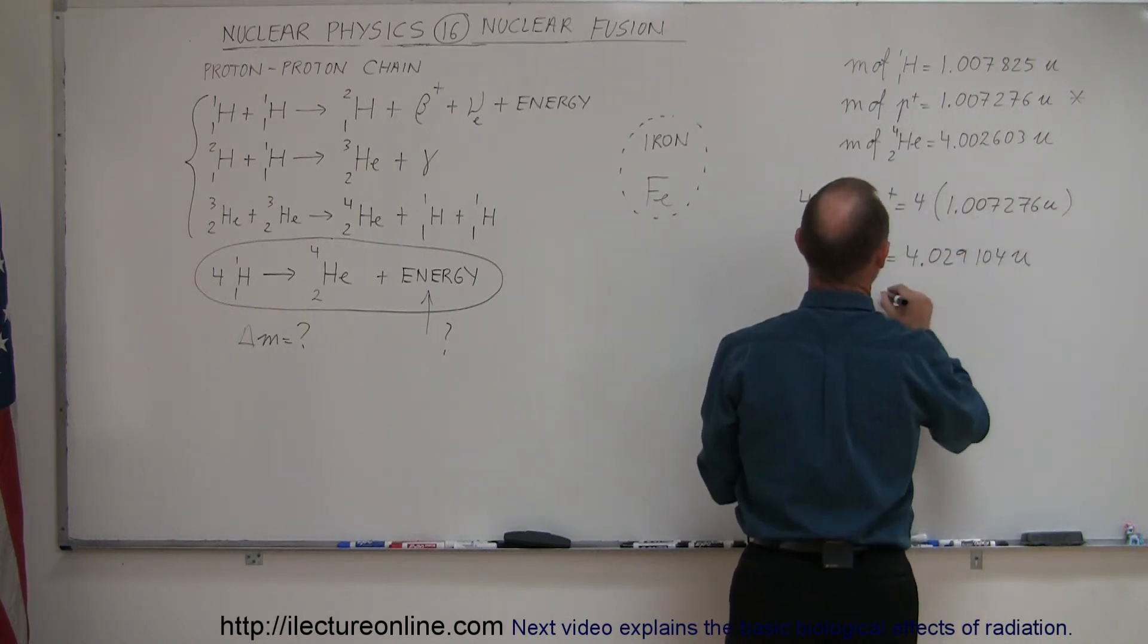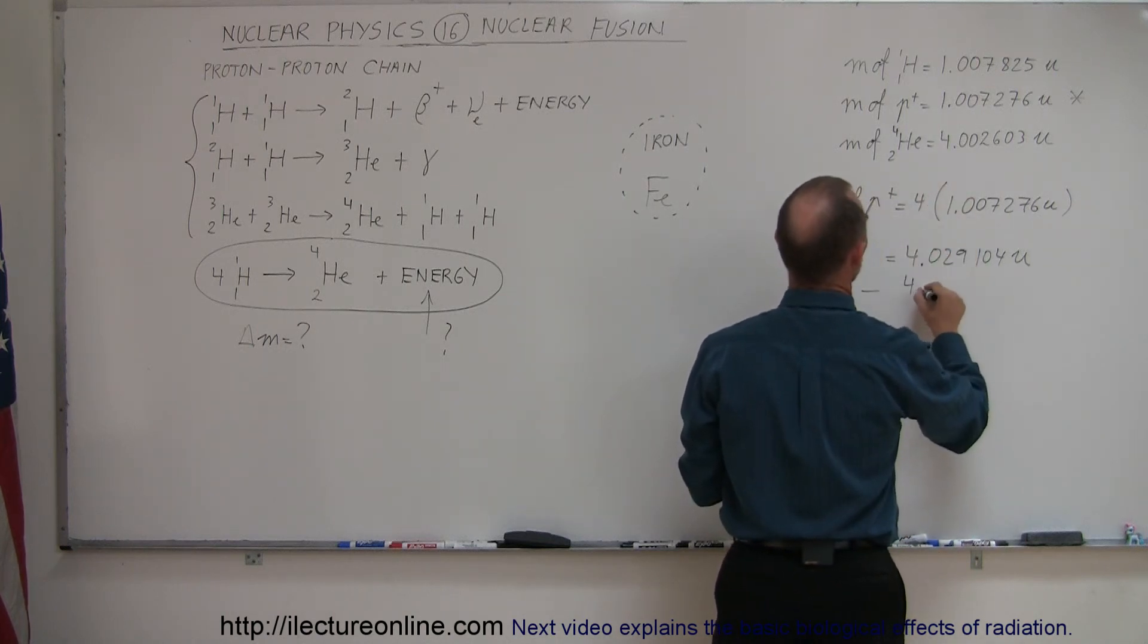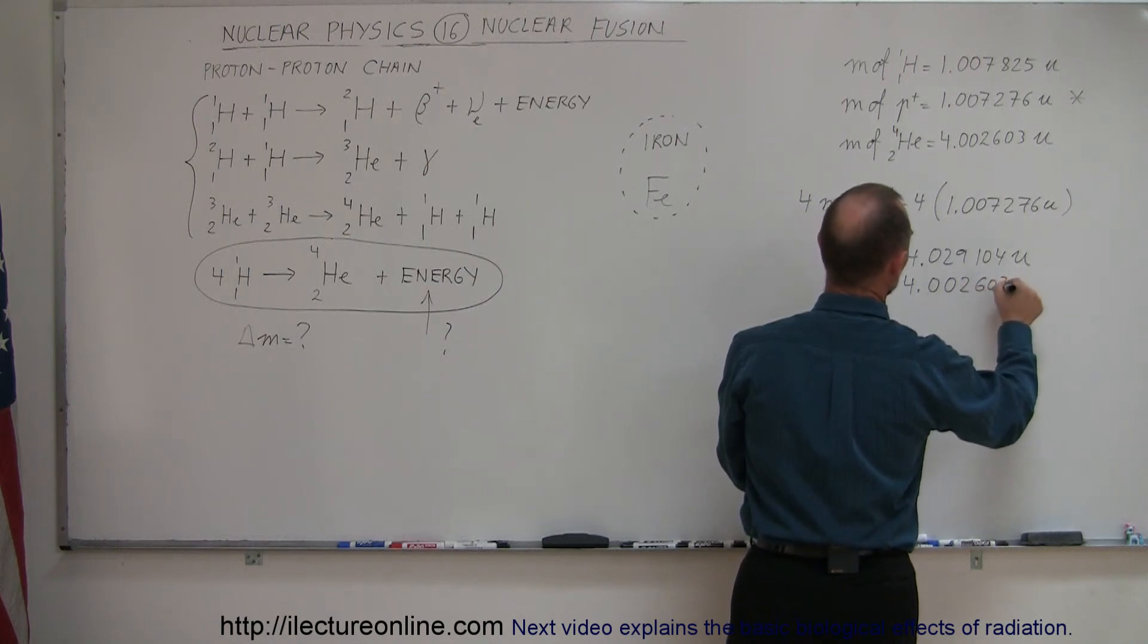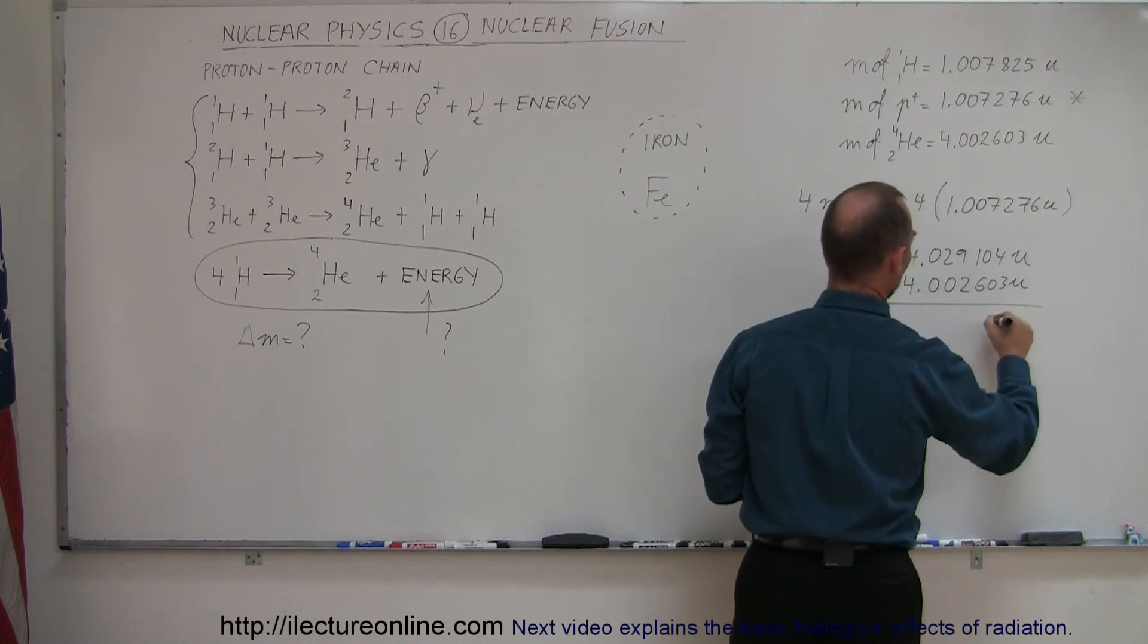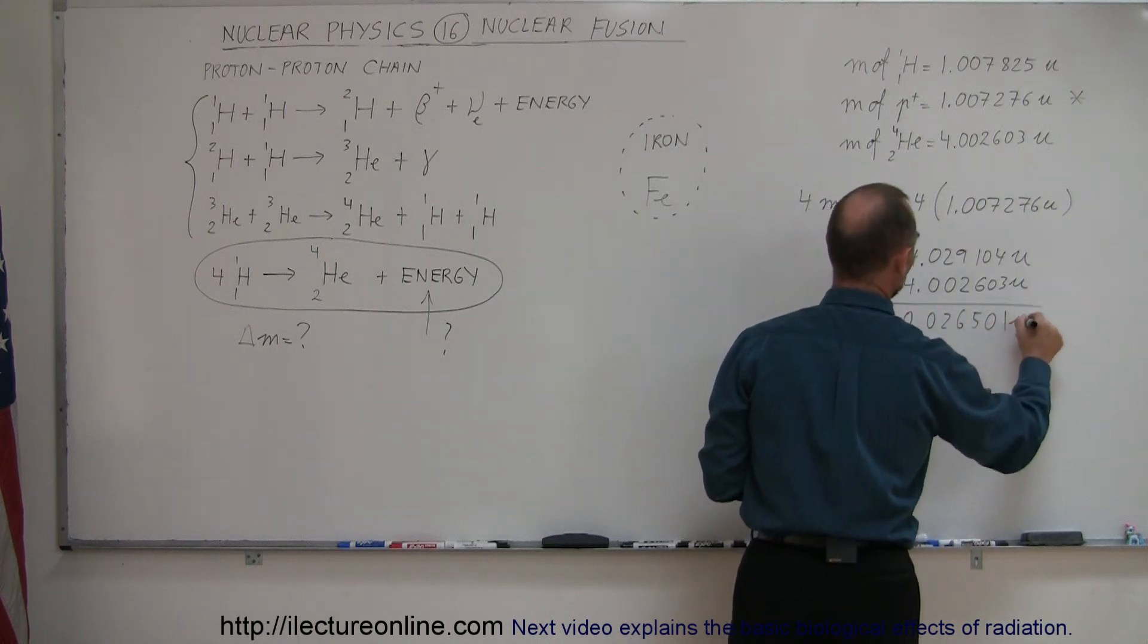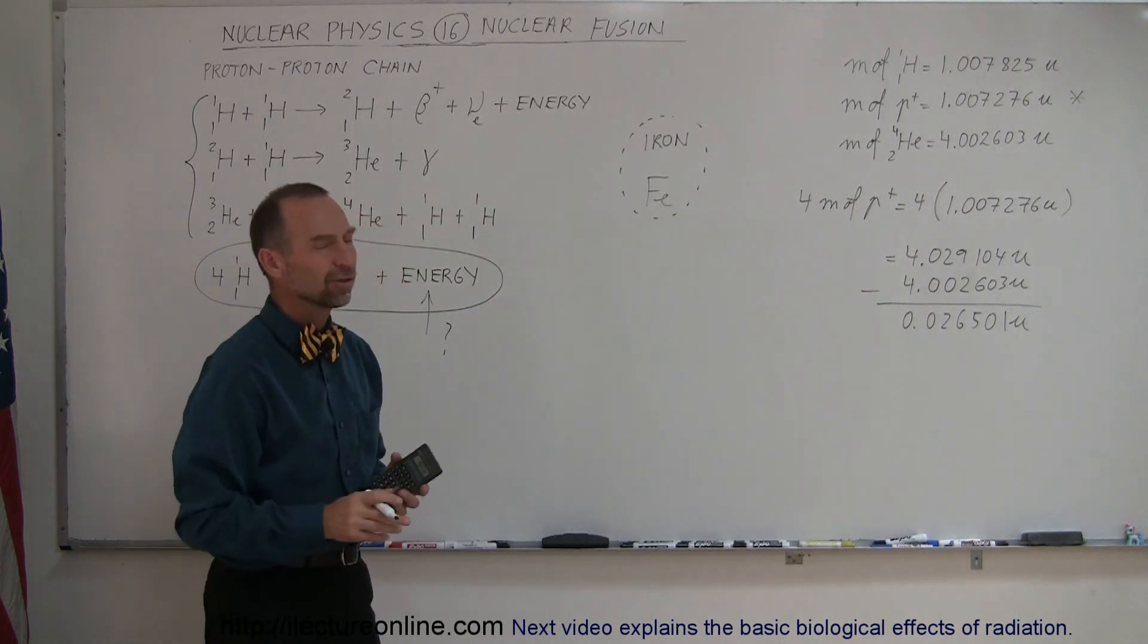From that we're going to subtract a helium nucleus, which is 4.002603 atomic mass units. Subtracting that: 3 from 4 is 1, that's 0, that's 11, that's 5, that's 8 minus 2 is 6, that's 2, 0, and 0. So the difference is 0.026501 atomic mass units.